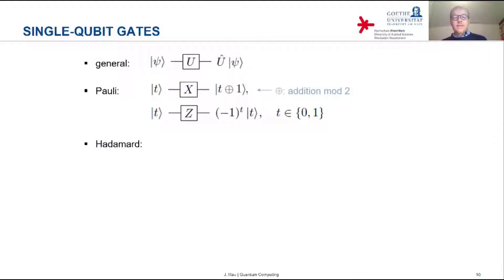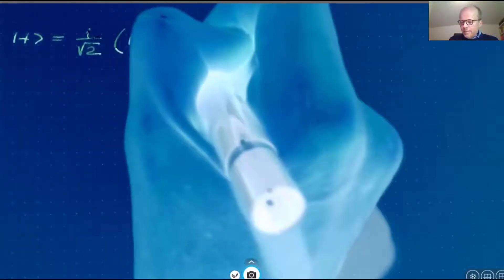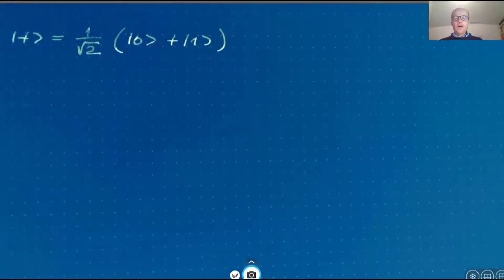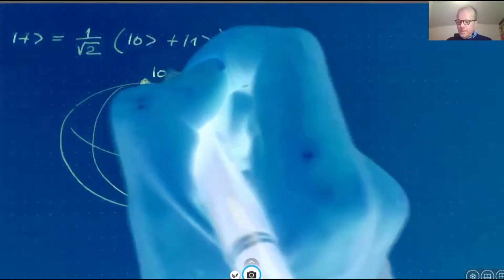A further single qubit gate which is used very often, and here is the first time we encounter the Hadamard operator. That's the so-called Hadamard gate. It's written with an H, and it maps the basis state zero to the plus state. The plus state was this superposition of zero and one. And on the Bloch sphere where we have the basis state zero at the north pole, the basis state one at the south pole.